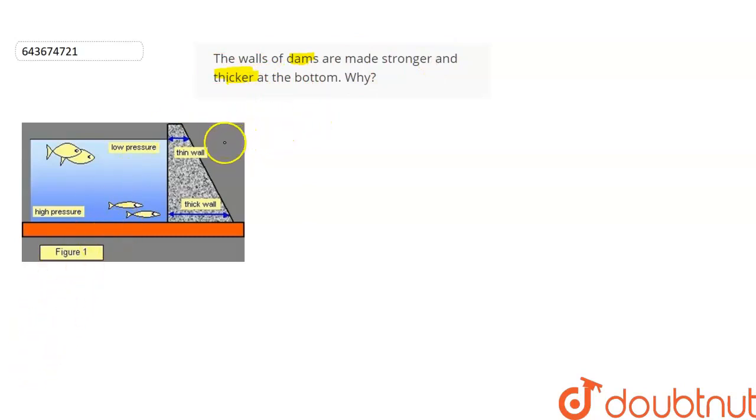We can see in the adjoining figure, a picture of dam is given to us. At the top, there is a thin wall, whereas at the bottom, there is a really thick wall of dam. So, what's the reason behind this? Let's understand.